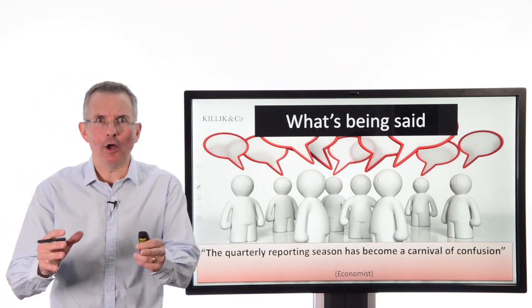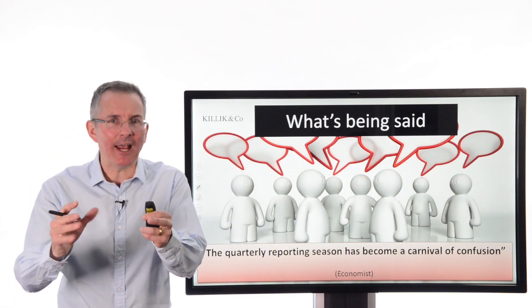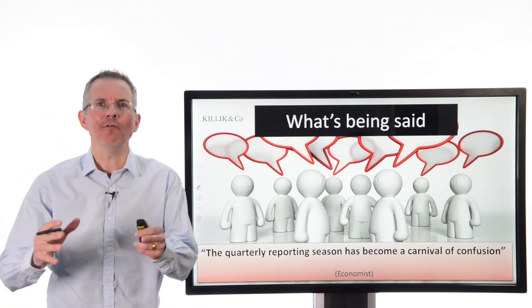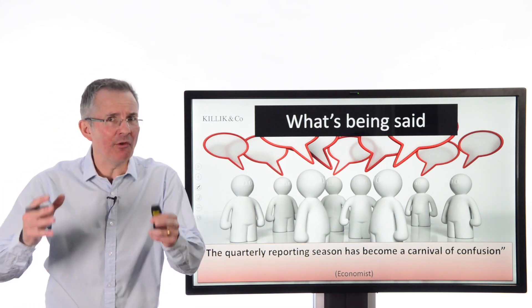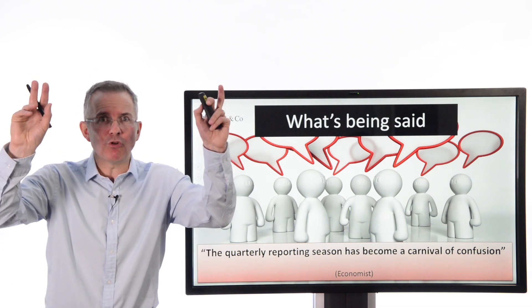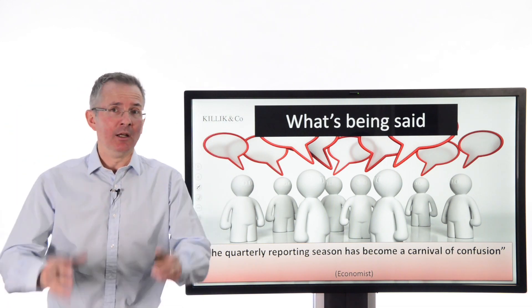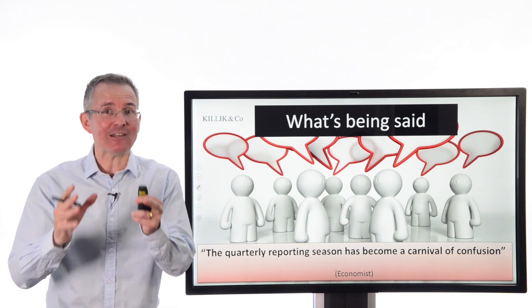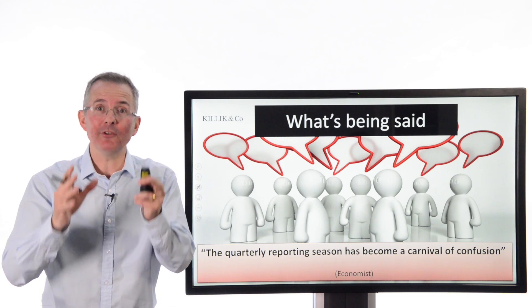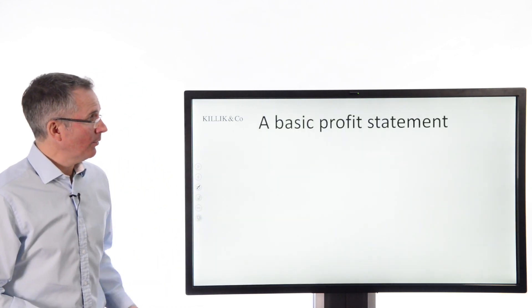Now what's being said, lots of things right now but The Economist hit the nail on the head. They said this quarterly reporting season has become a carnival of confusion for investors and the reason for that is there are so many different ways to describe profit for the year as a company. Now it's bad enough if the company sticks to the rules and regulations and the law and just reports the numbers it's supposed to which are these.